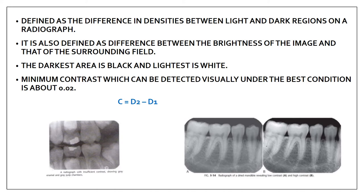Now we have seen what exactly density was. Density is nothing but the degree of blackness — that means if you have a film which is having high density, you will see that film as dark in color, having more blackish color, and if it is having low density, that film will appear more whitish. So contrast is nothing but the difference in the densities between the light and the dark region on a radiograph, or it is also defined as the difference between the brightness of the image and that of the surrounding field. The darkest area is black and the lightest is white.